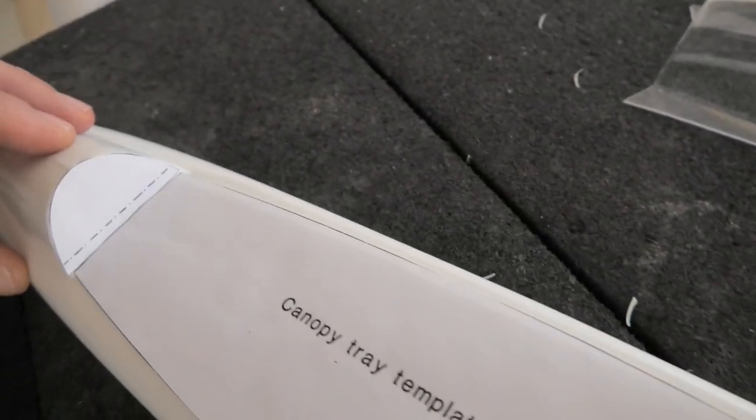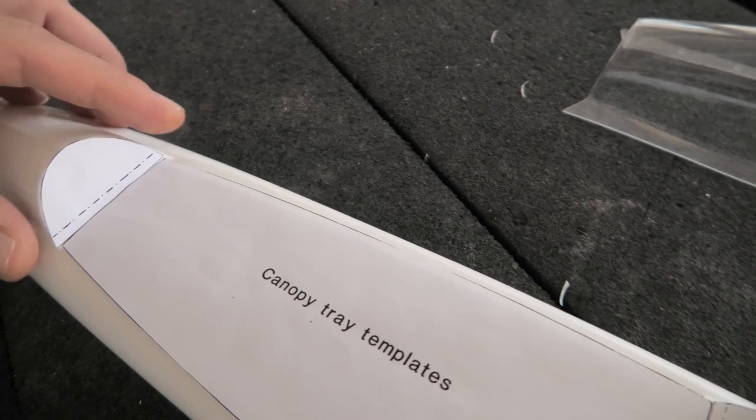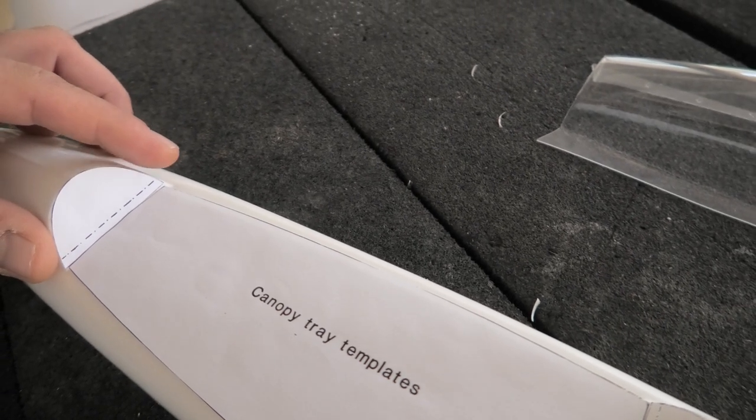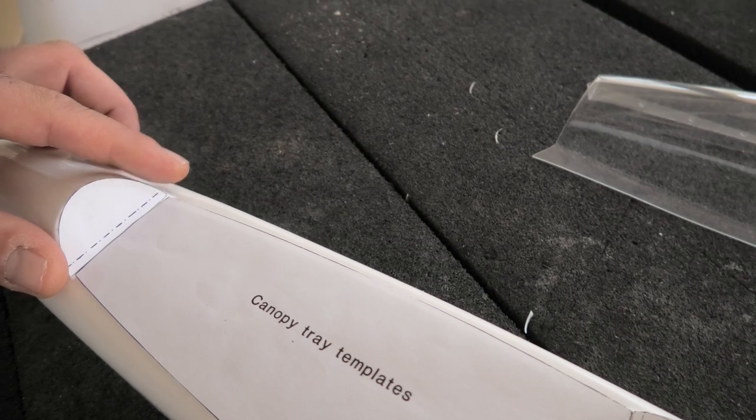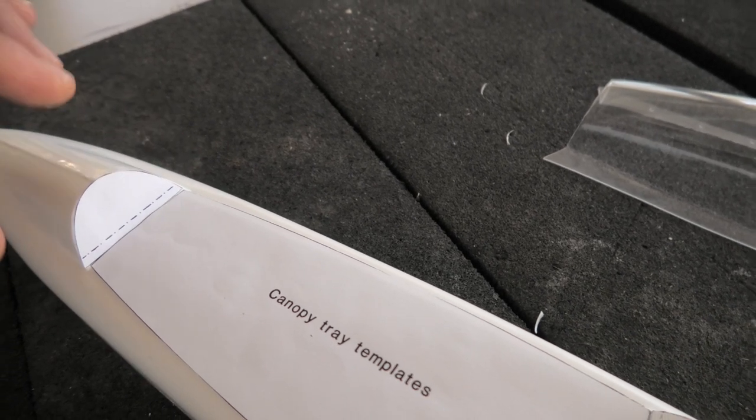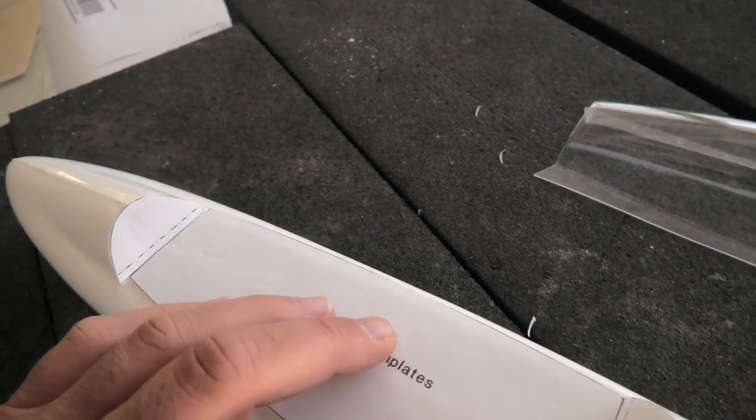I cut out these templates, and they seem to fit fairly well except for this front one here has some gaps. I think I'm going to make my own template instead of using this little front piece. Then I can transfer these over to the plywood and cut these parts out.